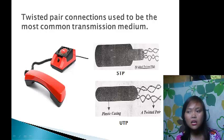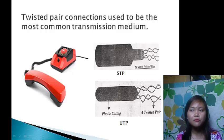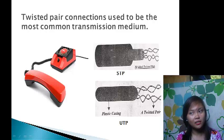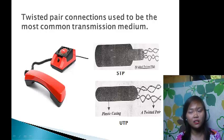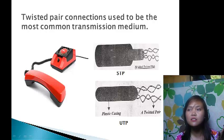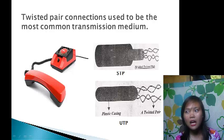The advantages of STP are that it is faster than UTP and coaxial cable. The disadvantages are that it is more expensive than UTP and coaxial, more difficult to install, and has a high attenuation rate.